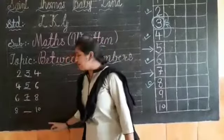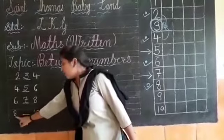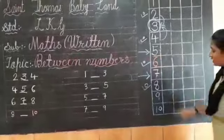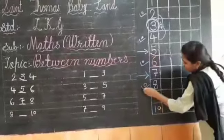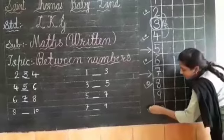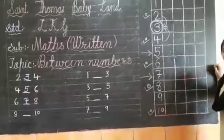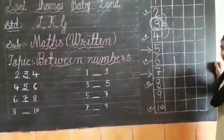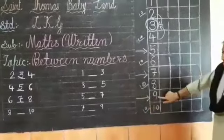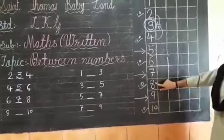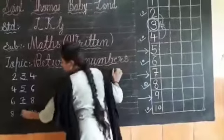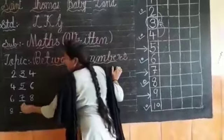Then, which number is in between of eight and ten? Here is eight and here is ten. Which number is there in between? Nine is in between of eight and ten. Our answer is nine.